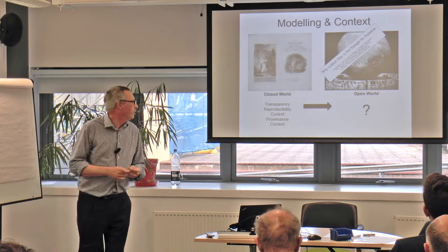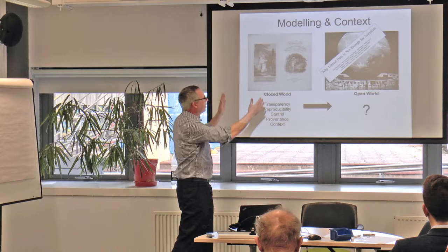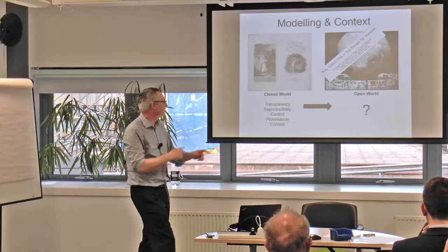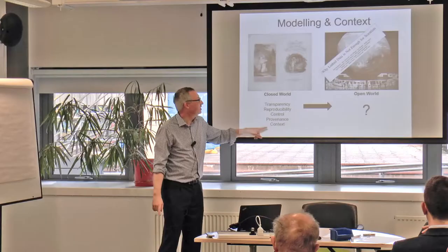This has some bearing on what we can do in the open world. This is Ovid's Metamorphoses — one of the early examples of modeling source materials, from Toronto and King's College London. It's about modeling literature in such a way that you bring in context — you can get a sense of the atmosphere throughout the book, sense when a particular character comes into the literature not just from their name but from context and adjectives. They use scientific techniques: transparency, reproducibility, control, provenance, and context.